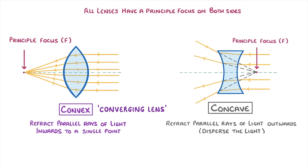Another important thing about the principal focus is that it will always sit on the axis, which is this line passing through the middle of the lens.